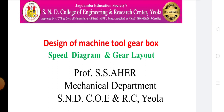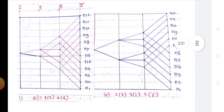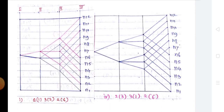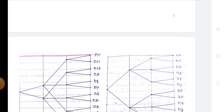In selection of optimum structure diagram, we earlier discussed that there are different possible structure formulas for a given range ratio and spindle speeds. Each structure formula gives a different structure diagram which decides the kinematic design of the gearbox. Hence, it is necessary to select the optimum structure diagram — the diagram which results in a compact gearbox with minimum number of gears, shafts, levers and bearings.